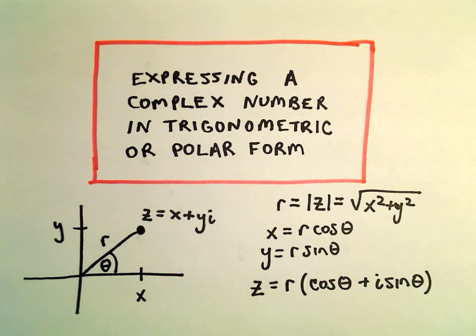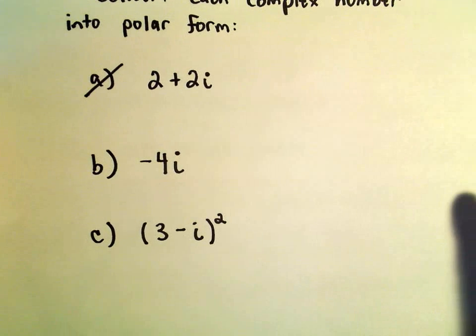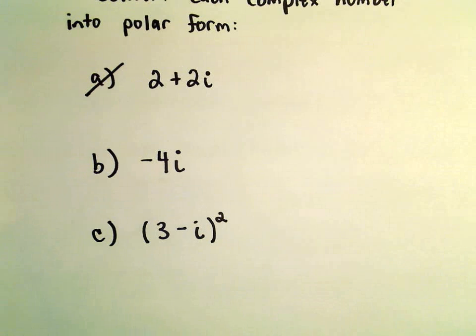All right, in this video we'll do another example of expressing a complex number in polar form. So here we're just going to do negative 4i.